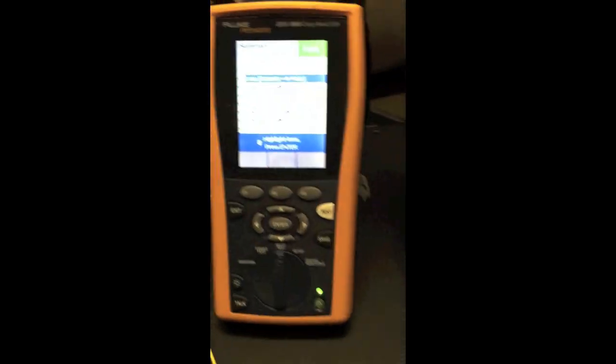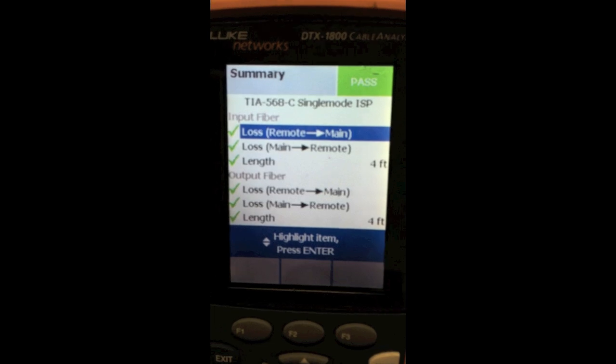Okay we actually have a negative loss found in the test result. And if you ever get this message it's not a bad thing. It just means that as the test went on the connection got better. So we're going to take a look at the results here. On our input fiber we see that our loss has checked off good. And the direction being that the light is traveling from our remote here back to the main is good.